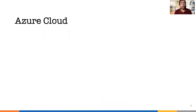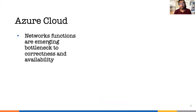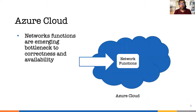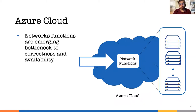In clouds like Azure, network functions are becoming an emerging bottleneck to correctness and availability. This is because most of the external traffic goes through one or more network functions before reaching any server in the cloud. These network functions are written custom to data center requirements, and validating these systems remains difficult due to their complex, stateful, timed, and distributed behaviors.